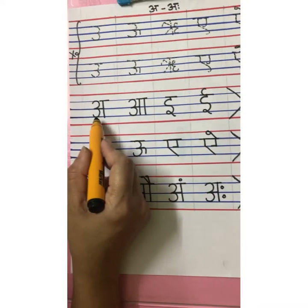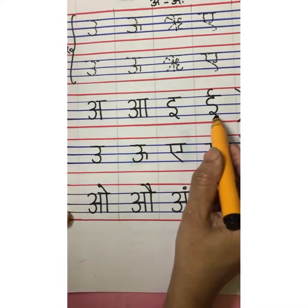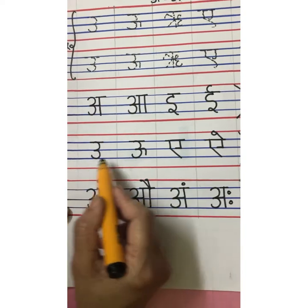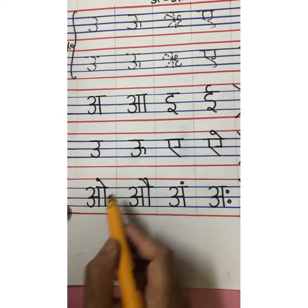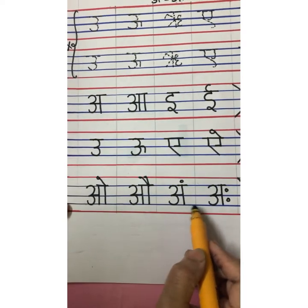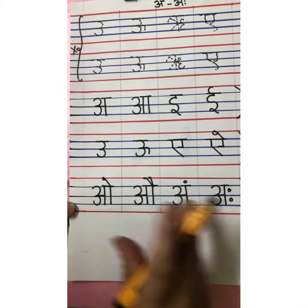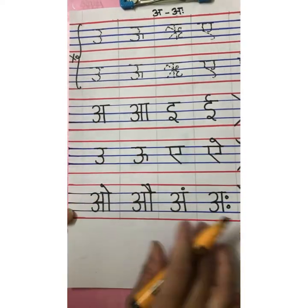So the full sequence is: A, Aa, E, Ee, U, Uu, Ri, E, A, Aa, O, Au, Ang, Aha. This way we are going to write A se Aha. Children, complete your work as per the instructions given in the video. Do your work neatly and keep reciting swar in sequence. Bye, see you in the next class.